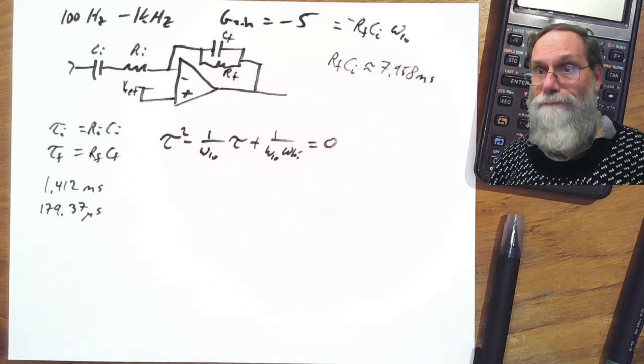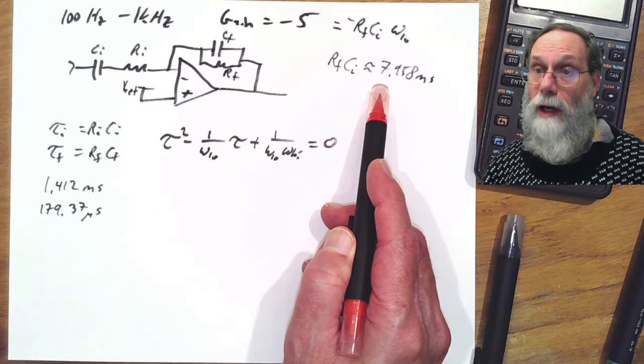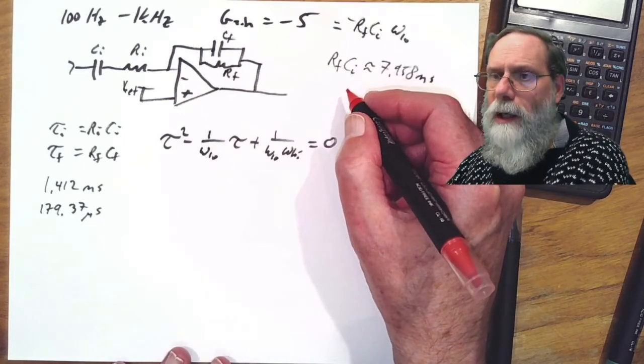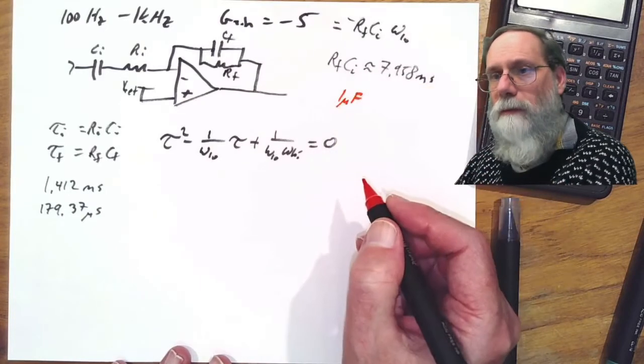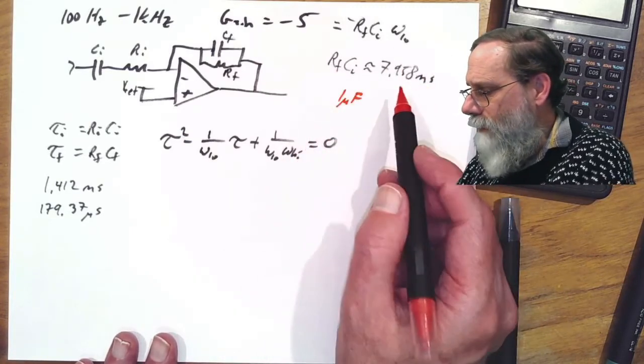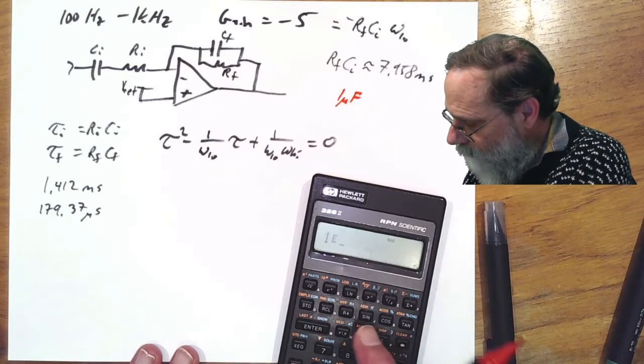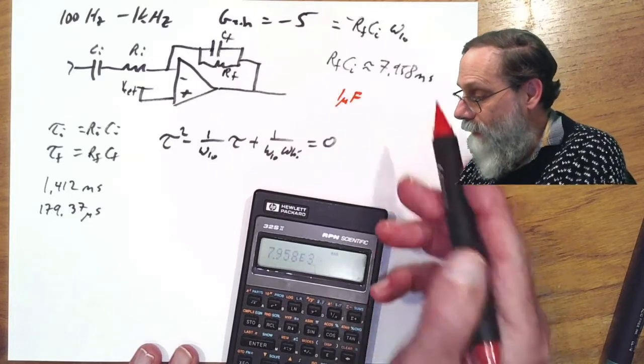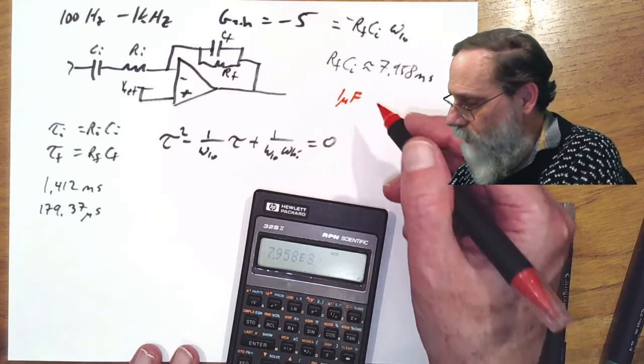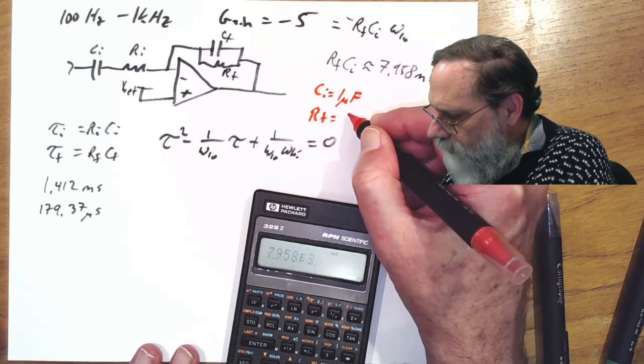The biggest time constant I got here was this rfci. It's about eight milliseconds. So let's make ci pretty big. And by pretty big, if I'm doing ceramic capacitors, one microfarad is reasonable. What would that give me for rf? Well, I've got 7.958 milliseconds divided by one microfarad. And I get 7.958 kilohms. That's not a nice round number. Not one of the ones on the E6 or E12 series. Let's put rf being, let's make it 8.2 kilohms.